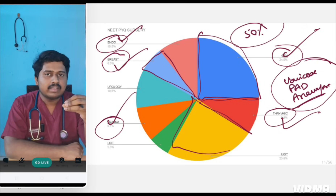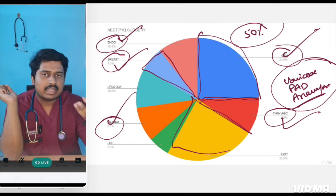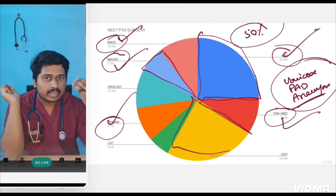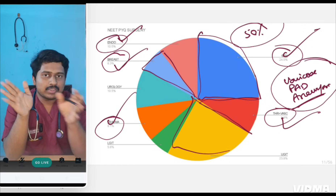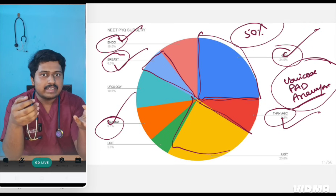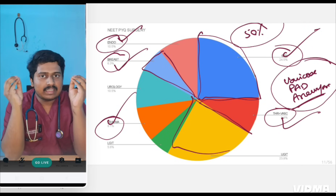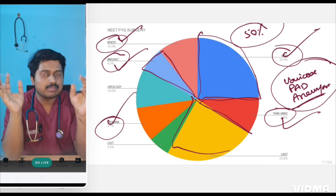No one can predict what the examiner will ask for NEET PG 2024, but you can predict based on probability — this many questions were asked previously, so we take an assumption these will be asked in future. Previous questions are the only markers of the repetitive topics that are asked — there is nothing else.